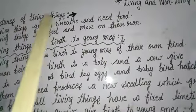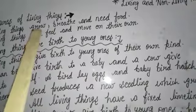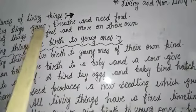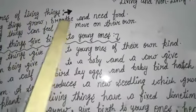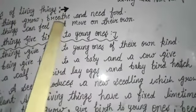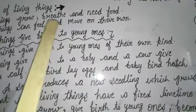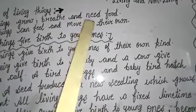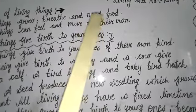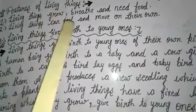पहले feature में हमने पढ़ा कि जो living things होती हैं, time के साथ बढ़ती हैं, grow होती हैं, उनका size increase होता है. Living things breathe — जो living things होती हैं, सांस लेती हैं. And they need food — उन्हें जिन्दा रहने के लिए खाने की जरूरत होती है. Next feature is living things can feel.